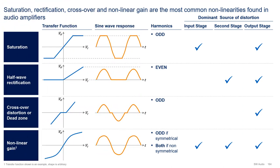The four most common distortions encountered in amplifiers are saturation, rectification, crossover, and nonlinear gain. First, we have saturation. Saturation clips the signal at high amplitudes — the gain of the block saturates. In its pure form, it produces odd harmonics, and it is the dominant source of distortion in the input stage — think when the amp is slewing and the differential pair is completely tilted to one side — and also the dominant source of distortion in the output stage when the amplifier output clips.